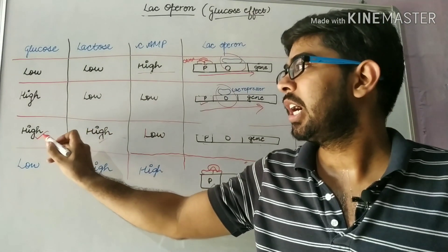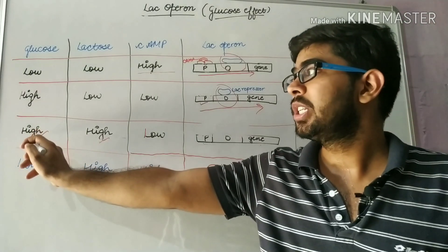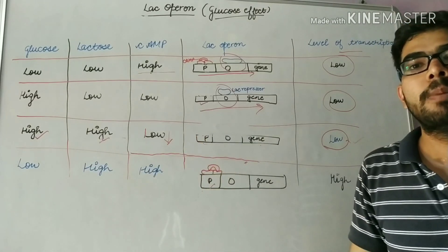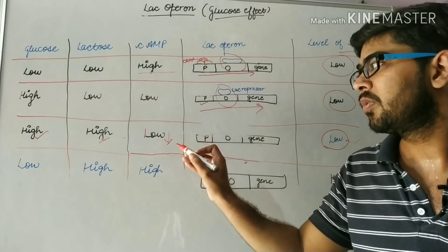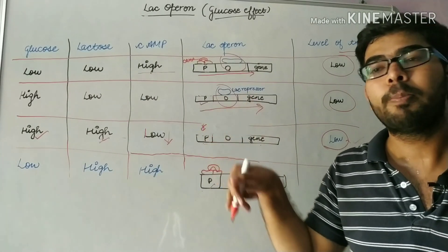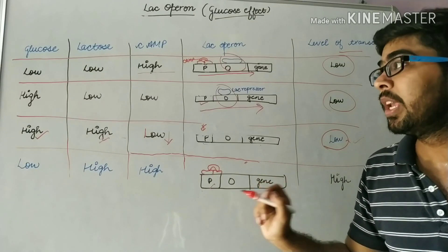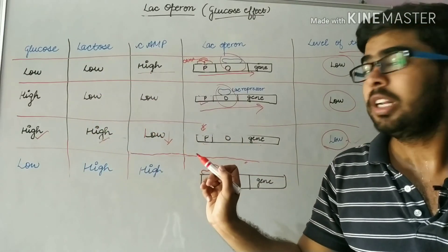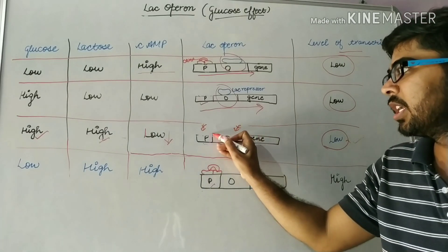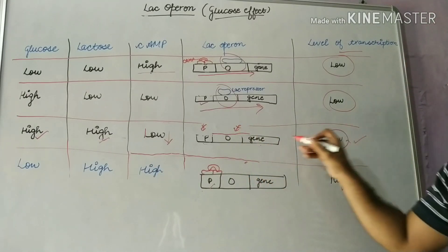The third case is when glucose is high in concentration and lactose is also in high concentration. As glucose is in high concentration, there will be low concentration of cyclic adenosine monophosphate, which cannot bind to the promoter region, so RNA polymerase cannot bind properly. Because of high lactose concentration, there will be inactivation of the repressor, and the repressor also cannot bind to the operator region. There will still be low expression of genes.